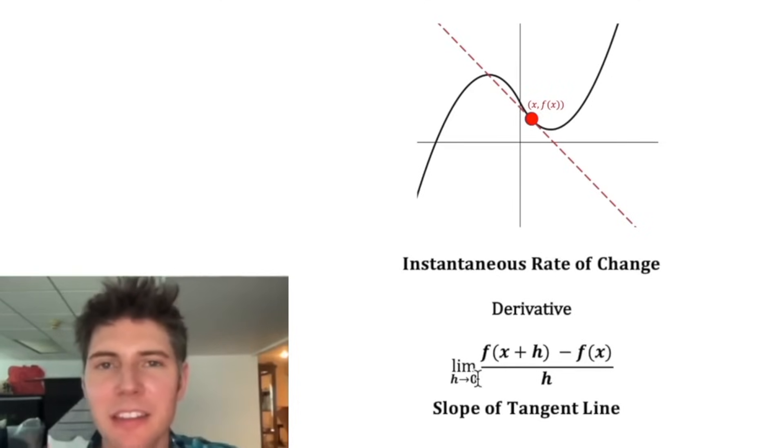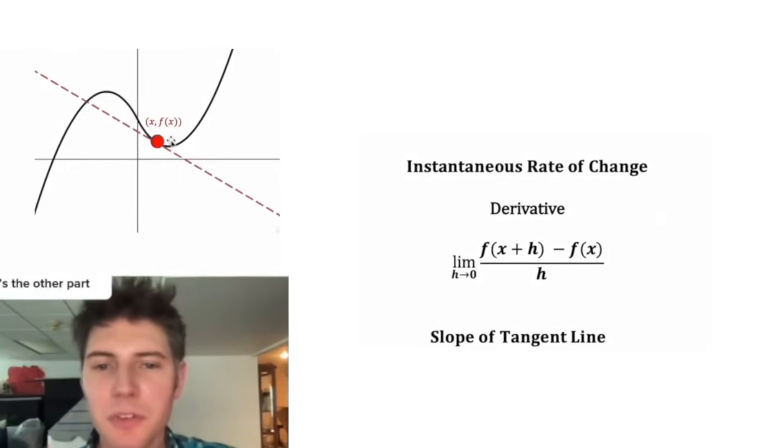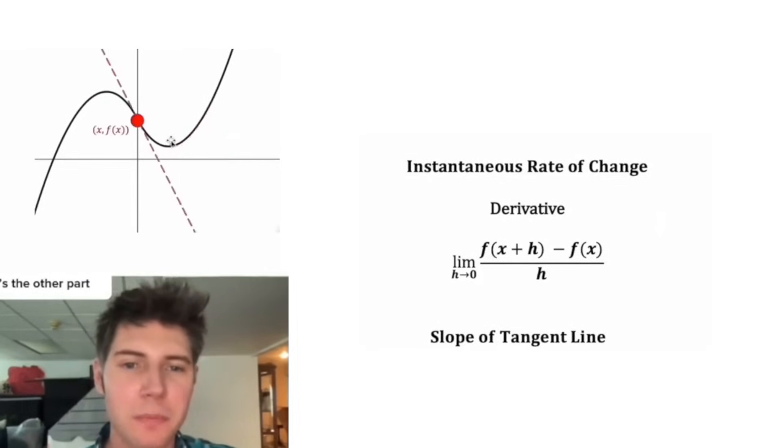So why did we make this a limit? Why don't we just say h is zero? Because if we made h zero, that would make this division by zero, and we can't do division by zero. So this is the magic of calculus. Continue watching to see it work. As this moves around, we can find the slope of the tangent line for all of these points.